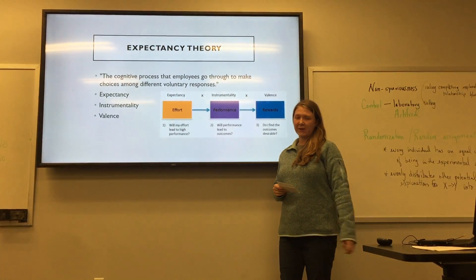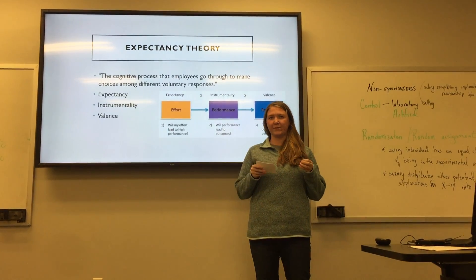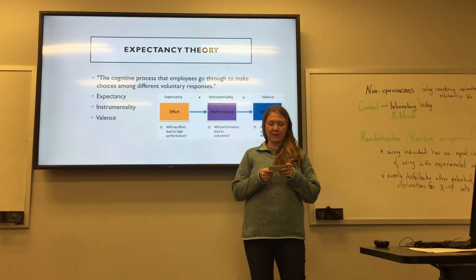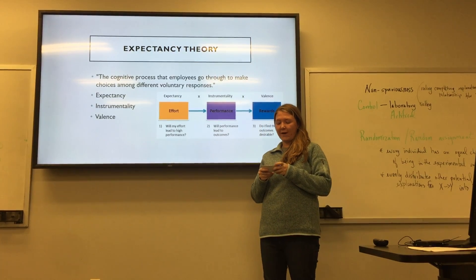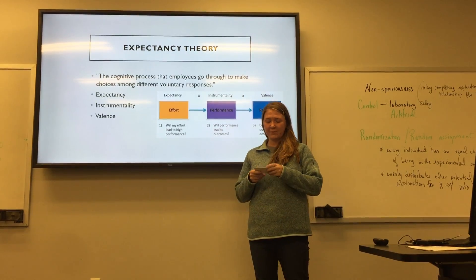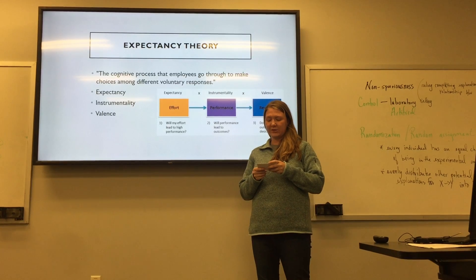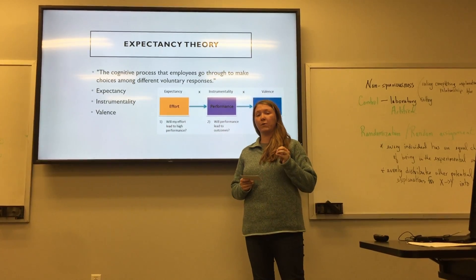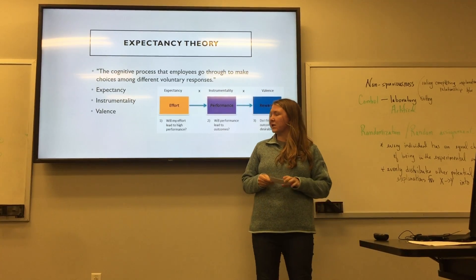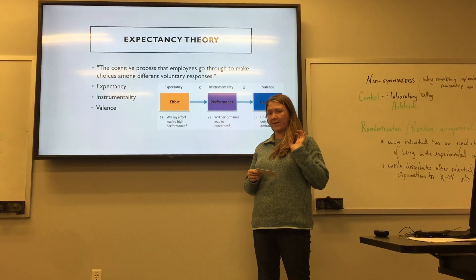With the expectancy theory, there are three different types of categories underneath it. There's expectancy, which is the belief that exerting a high level of effort will result in the successful performance of some task. Then there is instrumentality, which is the belief that successful performance will result in some outcome. And then there's valence, which is the anticipated value of the outcome associated with that performance.